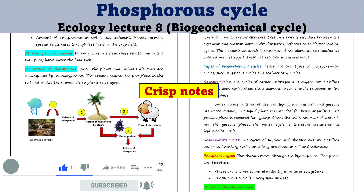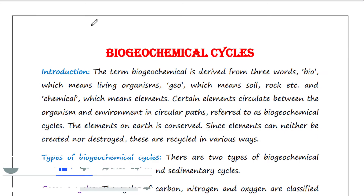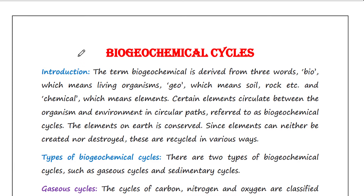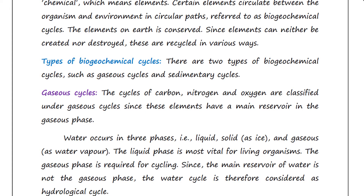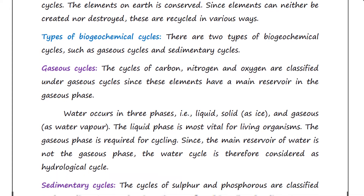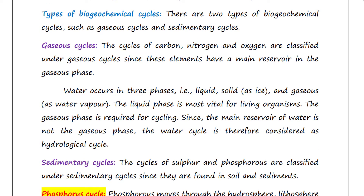In the previous lecture we have talked about biogeochemical cycles. We have seen that there are two types: gaseous cycle and sedimentary cycle. We have already talked about the water cycle, carbon cycle, nitrogen cycle, oxygen cycle, and sulfur cycle — links are provided in the description box.